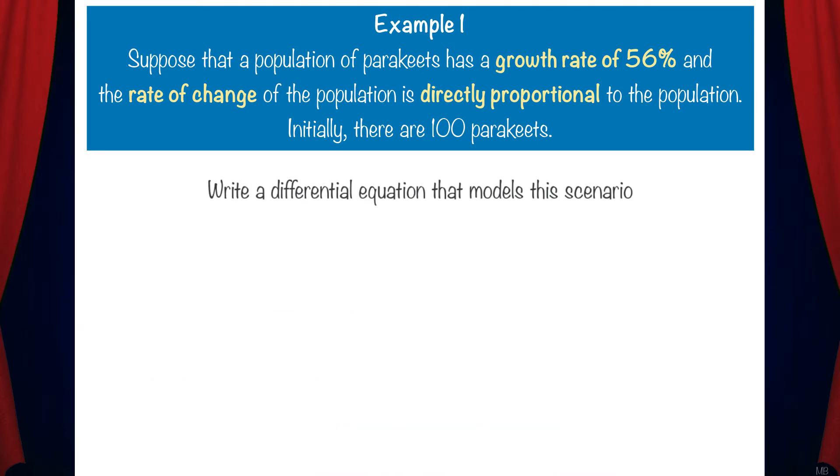Okay, let's go through the solutions. Write a differential equation that models this scenario. Since the rate of change of the population is directly proportional to the population, we'll use the differential equation dp/dt equals kp. k is the growth rate which is 56%, but we need to convert that to a decimal. So our differential equation is dp/dt equals 0.56p.